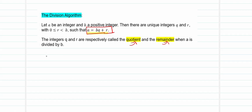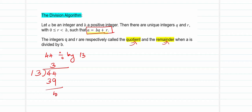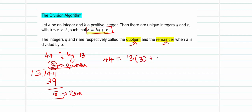For example, we have the integer 44 divided by another integer B, let's take that as 13. How can I express 44 by 13 using the division algorithm? Dividing 44 by 13, it goes 3 times giving 39 and leaves a remainder of 5. So by the division algorithm, 44 = 13 × 3 + 5, where 3 is the quotient and 5 is the remainder. This way of expressing any element as BQ + R is referred to as the division algorithm.